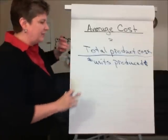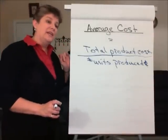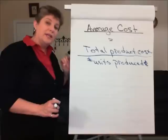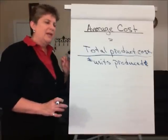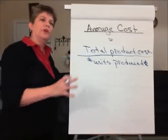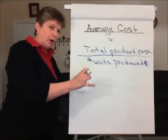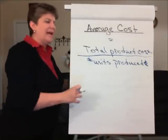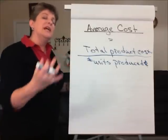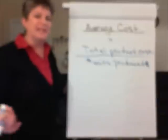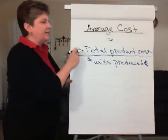Now this calculation assumes that the number of units started and completed during the period is the same. But what if we had work in process at the beginning of the period that was only partially complete, and then we added materials, labor, and overhead this period, but still had some units that were partially incomplete at the end of the period?